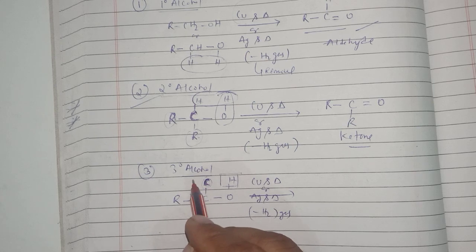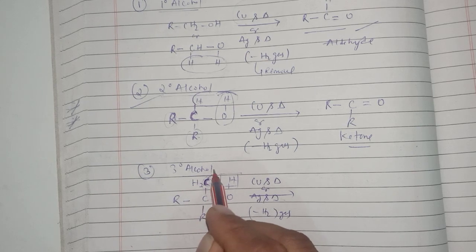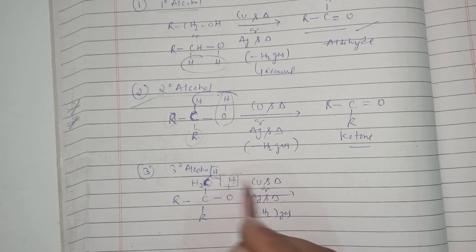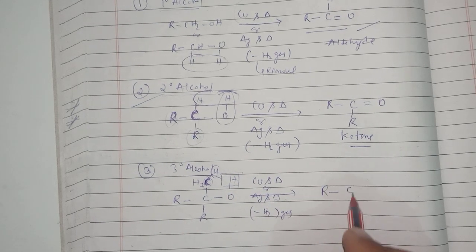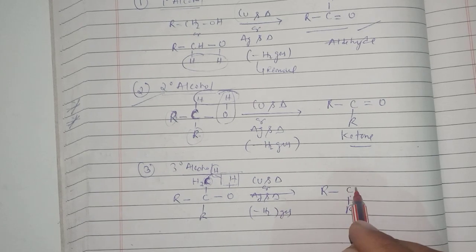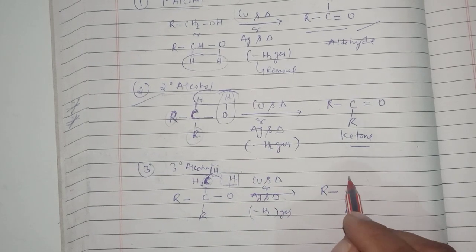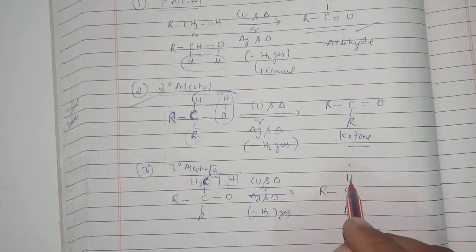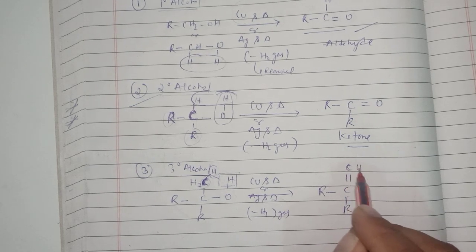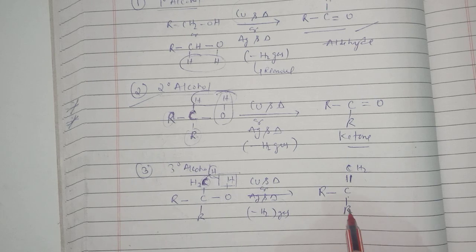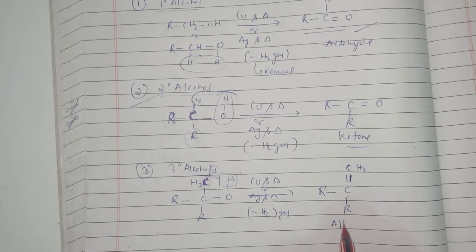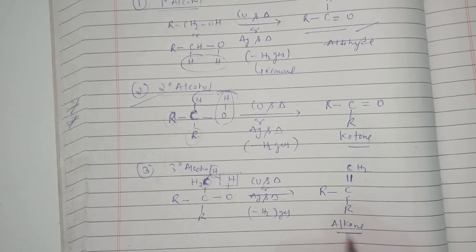To show the hydrogen being removed from the three-degree alcohol, I am writing the R group as CH3, and separating it as CH2 and H, so that these two hydrogen atoms getting removed can be shown. The product will be R-C(R) with a double bond to CH2, which is a type of alkene.